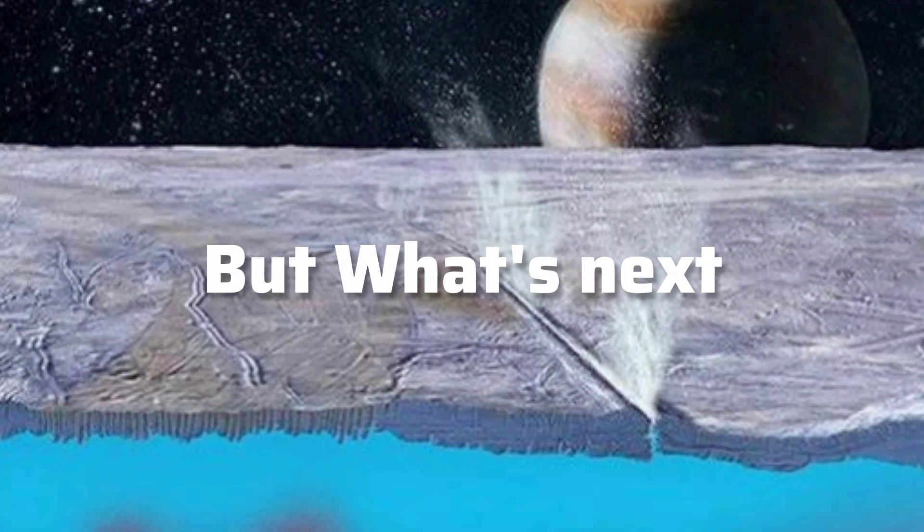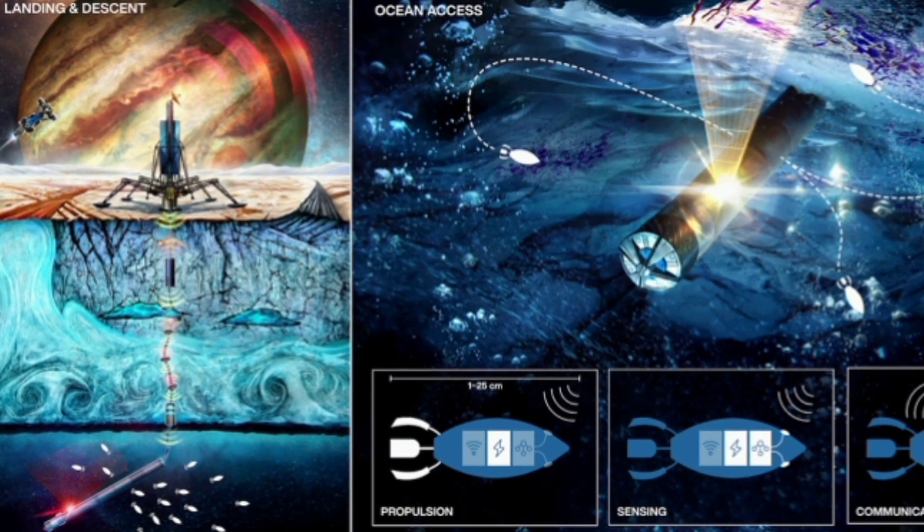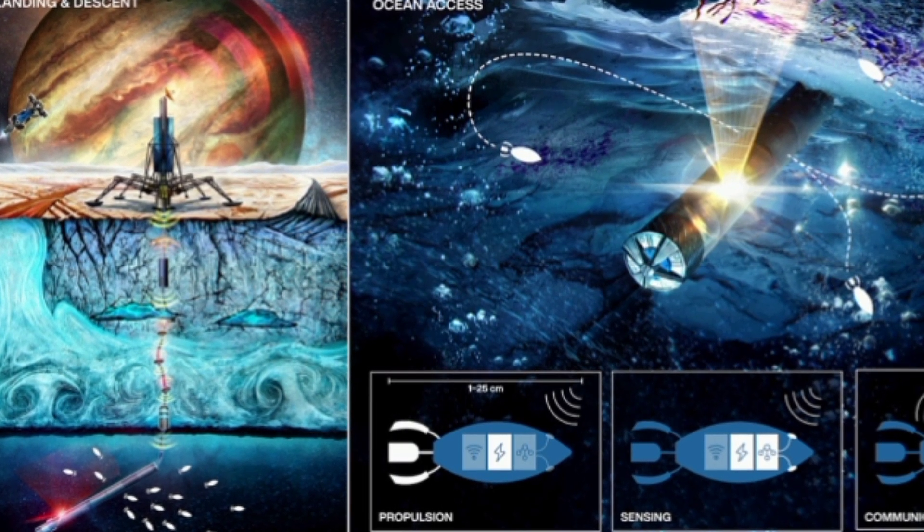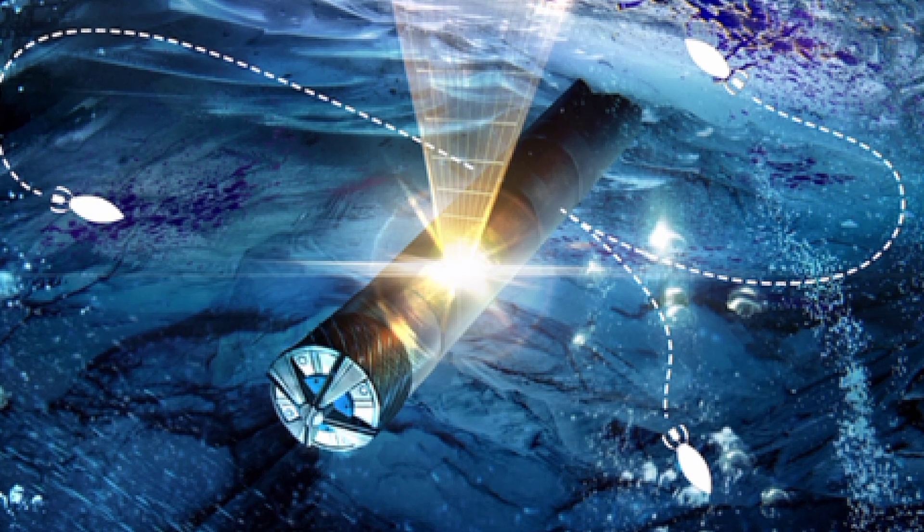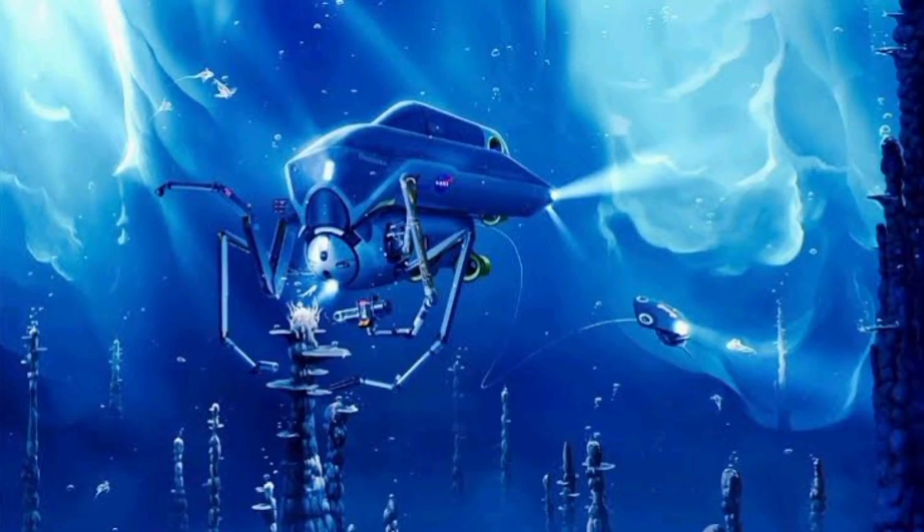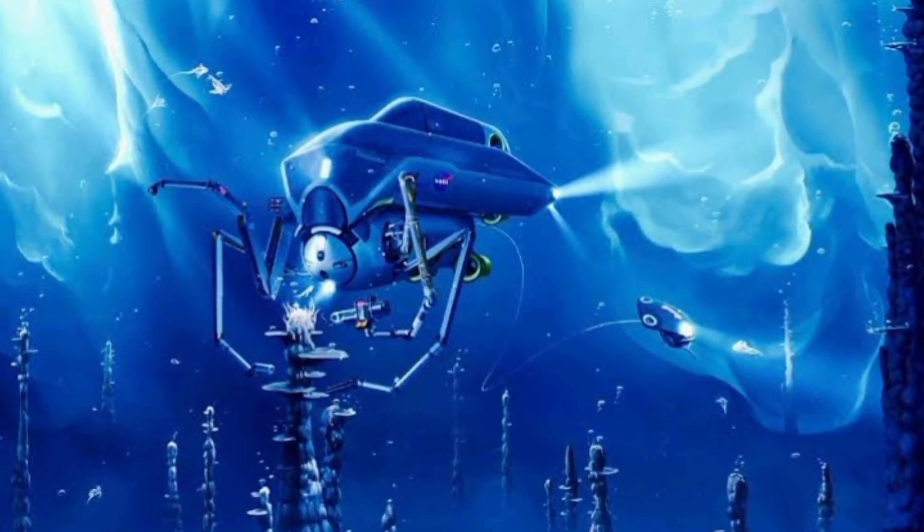But what's next after reaching the ocean? The Sesame cannot dive because it would be drained with all the ice drilling, but for swimming, the mothership uses tiny independent microswimmers, like mini underwater robots the size of a cell phone.